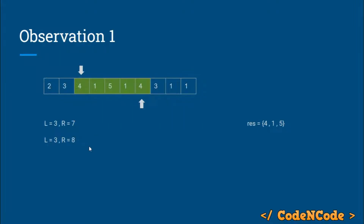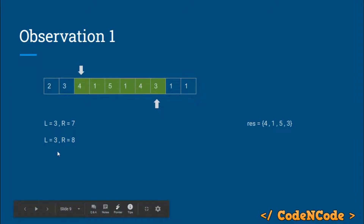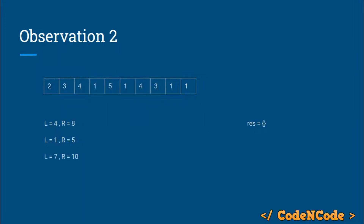Now suppose a new query comes in from three to eight. The naive approach would be to delete the whole set and start from three going till eight again. But the smart approach is to just extend your already available answer to the right — we already had the range from three to seven, so we just extend our right pointer and add three to our set. Observation one: Mo's algorithm keeps the answer of the previous query and then only extends or reduces the range of the previous query to answer the next query.